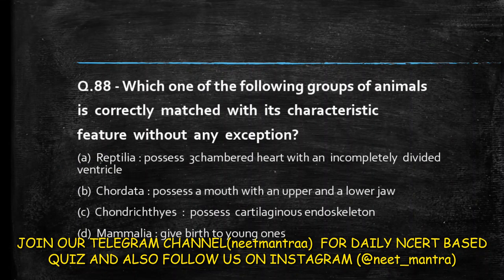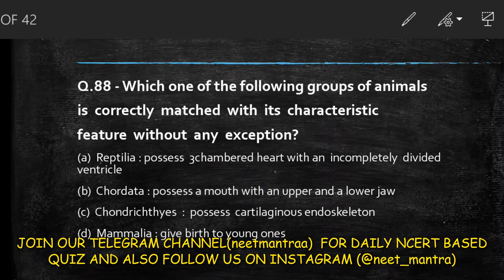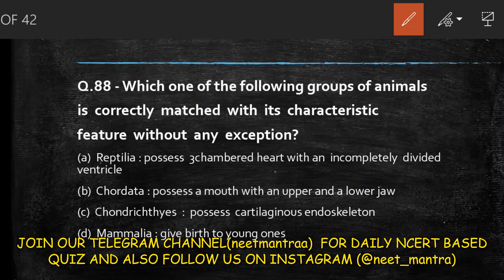Next question: which one of the following groups of animals is correctly matched with its characteristic feature without exception? Reptilia — possesses three-chambered heart with incompletely divided ventricle; but crocodile has a four-chambered heart, so there is an exception. Chordata — possesses a mouth with upper and lower jaws. The answer is option C, as Chordata's coelom being true coelom or Chordata having ovi-parous and vivi-parous both applies without exception.